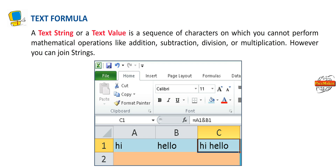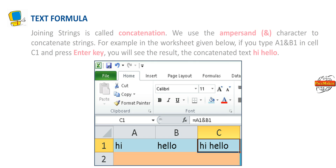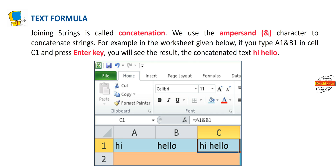Text Formula: A text string or text value is a sequence of characters on which you cannot perform mathematical operations like addition, subtraction, division, or multiplication. However, you can join the strings. Joining strings is called concatenation. We use the ampersand character to concatenate strings. For example, in the worksheet given below, if you type =A1&B1 in cell C1 and press Enter, you will see the concatenated text: Hi, Hello.